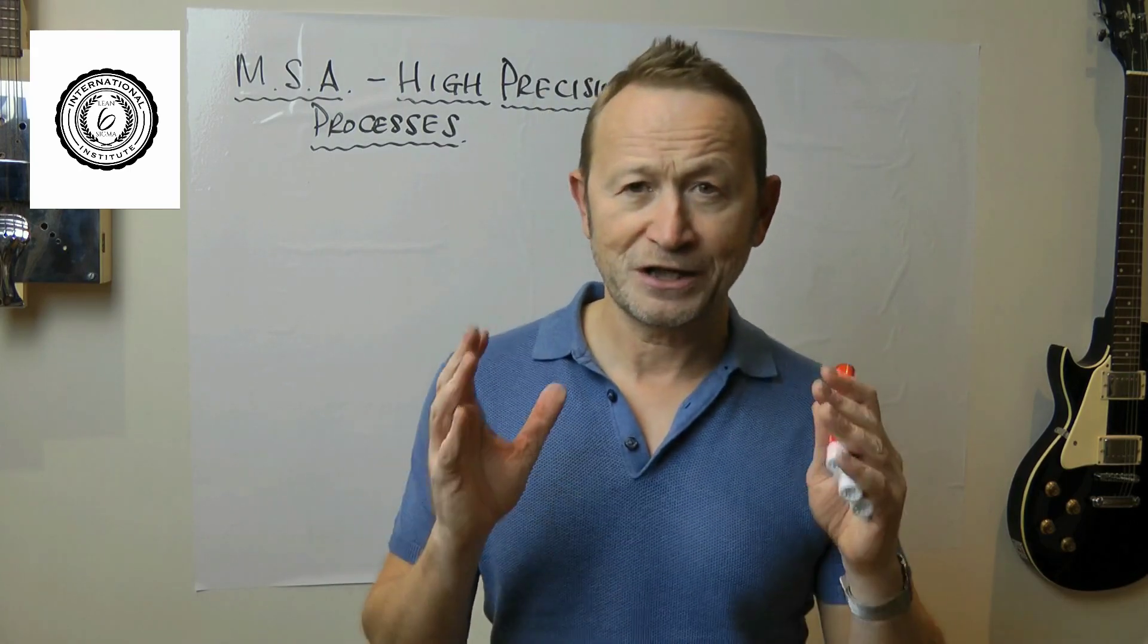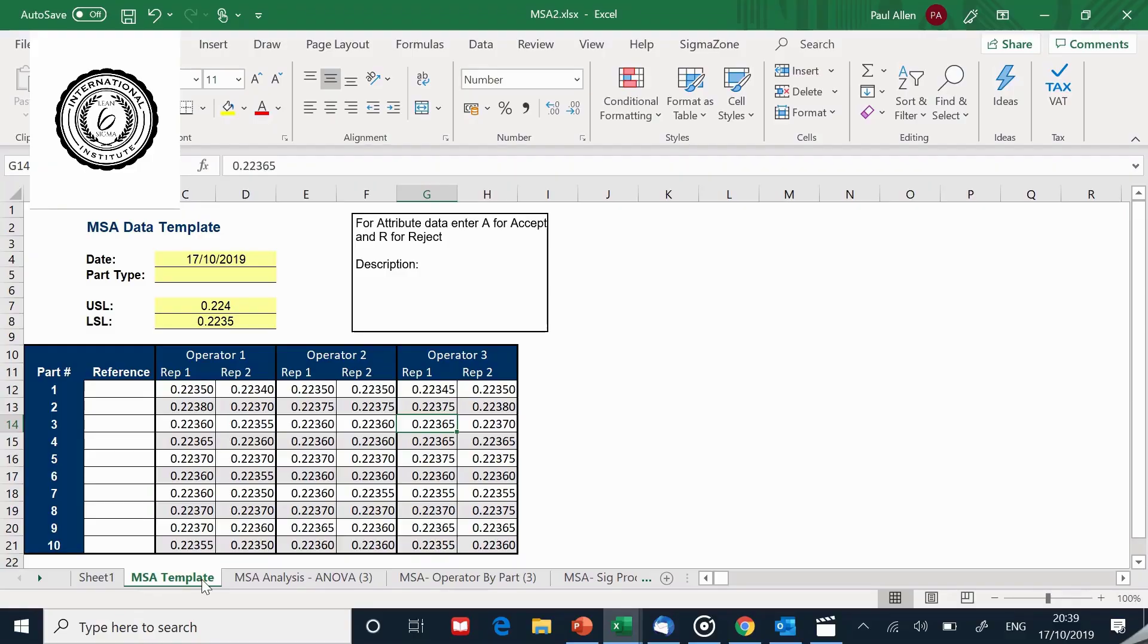So let's take a look at the MSA. Here's the MSA table. We've got three operators, we've got 10 parts, and each part has been measured twice. We are measuring in inches, so some of the measurements go down to ten thousandths of an inch, we go down to hundred thousandths of an inch. This was the first MSA with three operators.